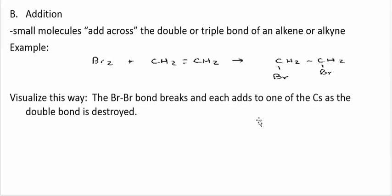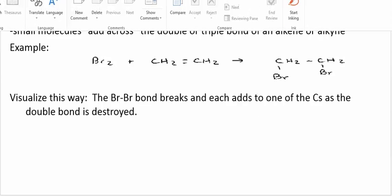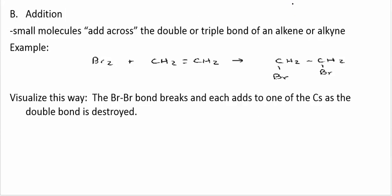Small molecules add across the double or triple bond. For example, bromine when added to C2H4 produces this compound over here. Now we can visualize this reaction happening this way. The bromine bond is broken and the double bond is broken as well.